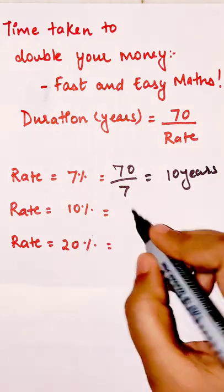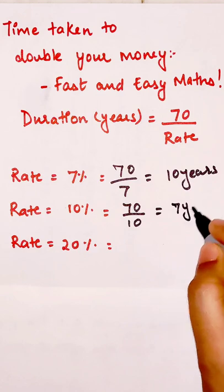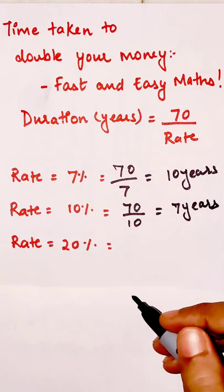Similarly, if the rate is 10%, then 70 divided by 10 means 7 years is the time taken to double your principal.